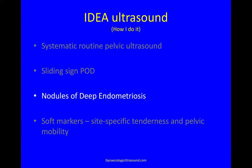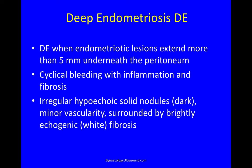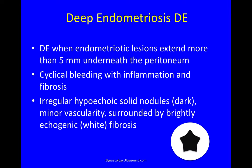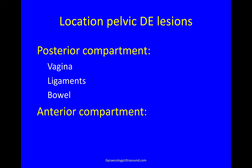Next I'll look for nodules of deep endometriosis. Deep endometriosis is when the lesions extend for more than five millimetres underneath the peritoneum, causing cyclical bleeding with inflammation and fibrosis, resulting in irregular hypoechoic solid nodules with minor vascularity surrounded by brightly echogenic fibrosis. We find these in the posterior compartment — in the vagina, in the ligaments, and in the bowel — and in the anterior compartment in the bladder and the ureter.